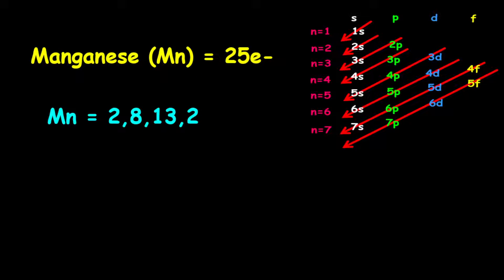Therefore, the electron configuration is 2, 8, 13, and 2.